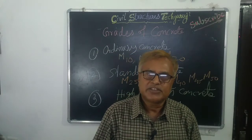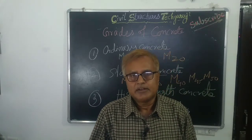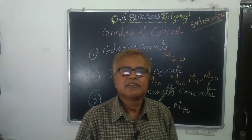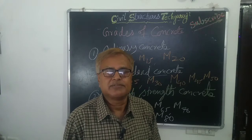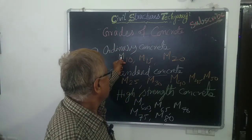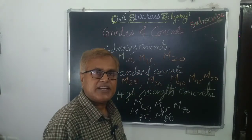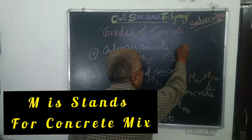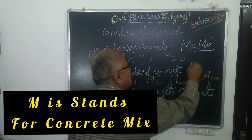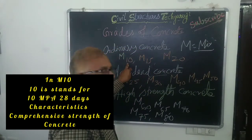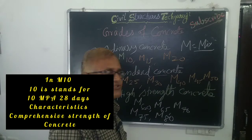Ordinary concrete grades are generally seen in village areas or small works, often done on a trial-and-error basis. In every concrete designation, 'M' stands for mix, and the number represents the characteristic compressive strength — for example, M10 means 10 Newton per mm² characteristic strength of the concrete.